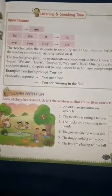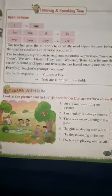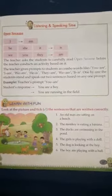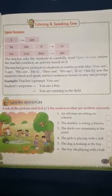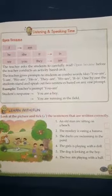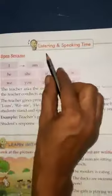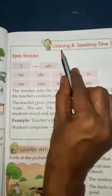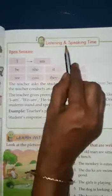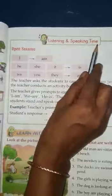Good morning children. Welcome to today's session. Today we will continue chapter 6, 'Is and Are' in English grammar. So children, all of you open your English grammar book page number 37. See what is written: listening and speaking time.